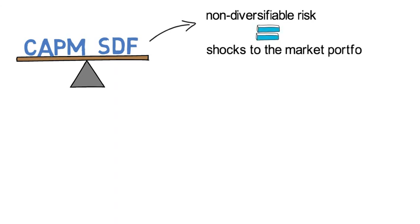It hence won't be too surprising to note in later videos that equilibrium models like the popular CAPM assume a special stochastic discount factor. In short, the stochastic discount factor of the CAPM assumes that non-diversifiable risk, which means the systematic risk, coincides with shocks to the market portfolio.